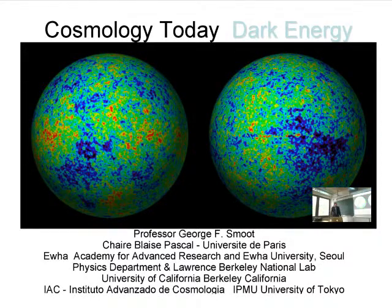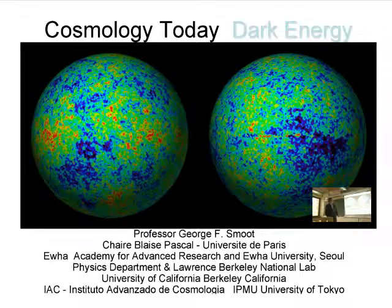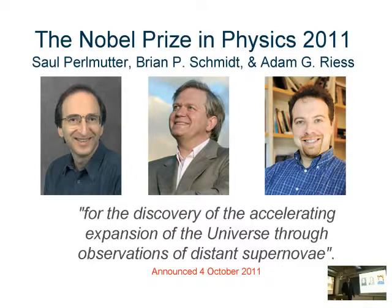Last time, I want to tell you a bit more about dark energy, which is really the part about the accelerating universe. Two things happened on October 4th: the first was the announcement of the Nobel Prize in Physics to Saul Perlmutter, Brian Schmidt, and Adam Riess for the discovery of the accelerating rate of expansion of the universe through observations of distant supernovae. I'll go over that in a little more detail, and then TDA will post the slides on the web.